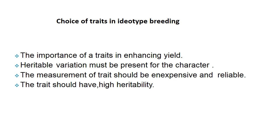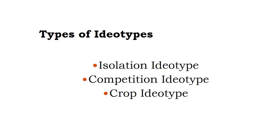The choice of traits in idiotype breeding depends on: importance of the trait in enhancing yield, heritable variation must be present, measurement of the trait should be inexpensive and reliable, and the trait should have high heritability. There are three major types of idiotypes: isolation idiotype, competitive idiotype, and crop idiotype. Isolation idiotype means the crop responds well when plants are well-spaced, but yields poorly at commercial scale.